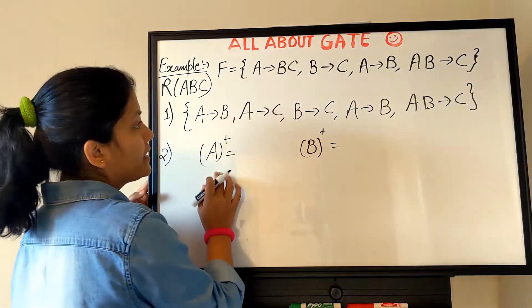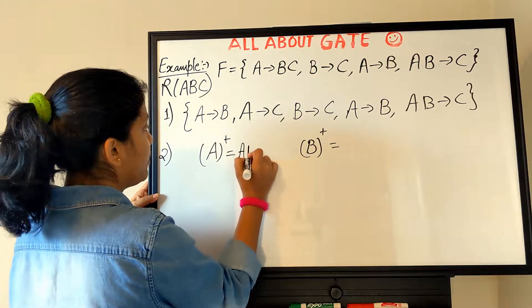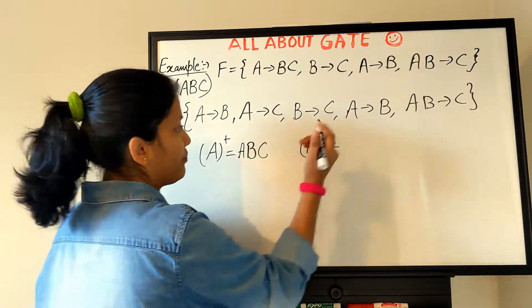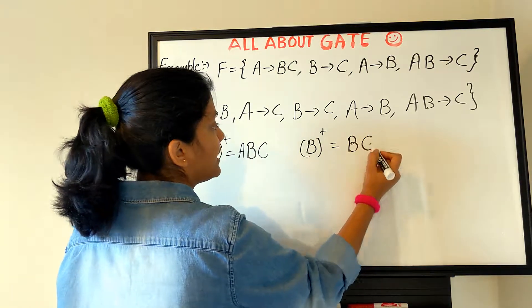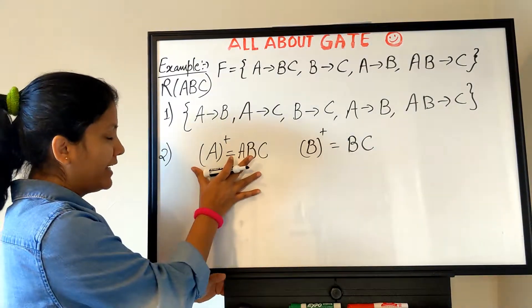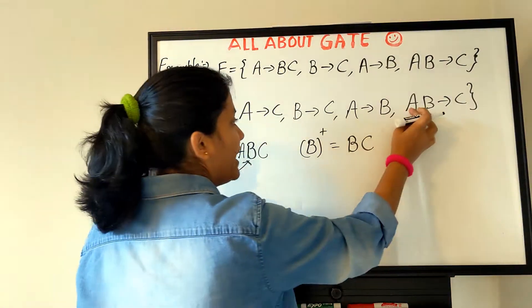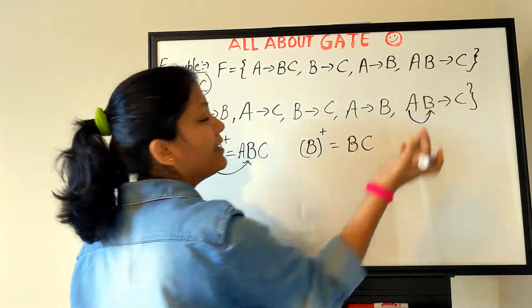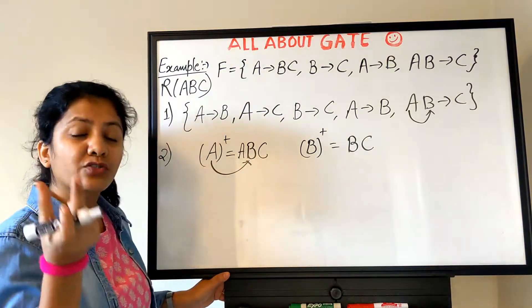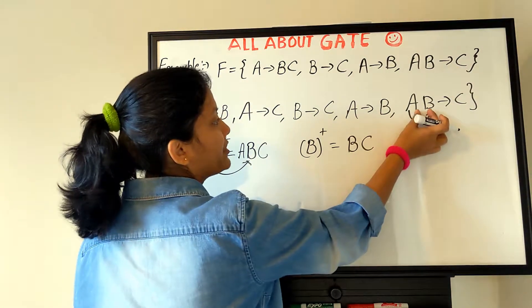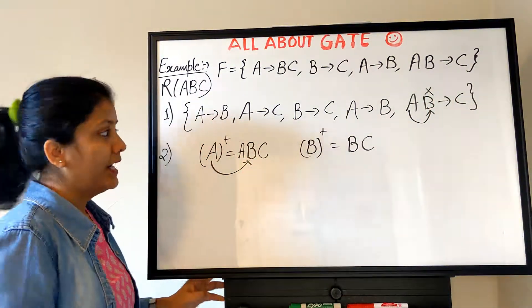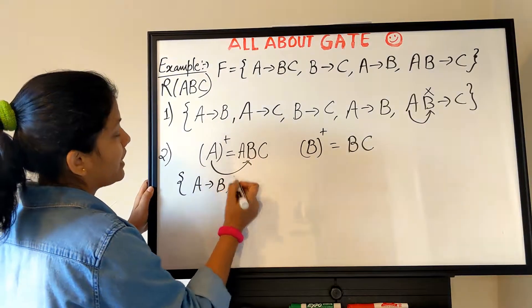The power of attributes in a functional dependency is what they can determine — applying all inference rules. Let's check A⁺: A determines itself, from A→B it determines B, from A→C it determines C. So A determines all three attributes. Now B⁺: B determines itself, B also determines C, but B does not determine A. Since A determines B, B is the weak attribute in this combination, and we can remove B from the LHS of AB→C.